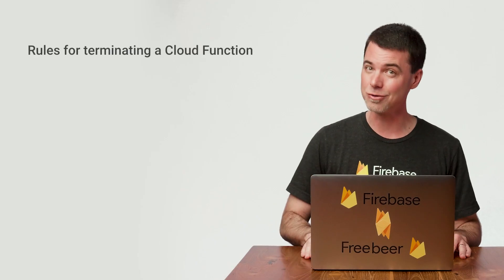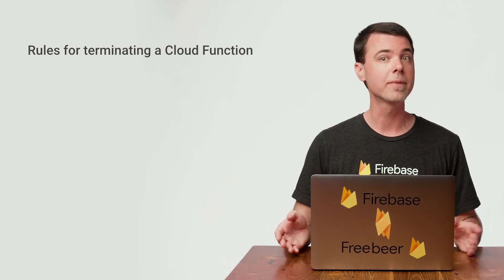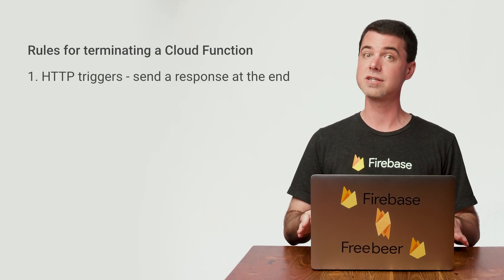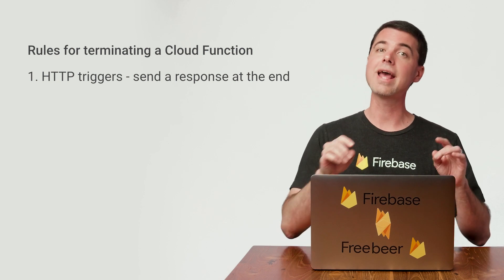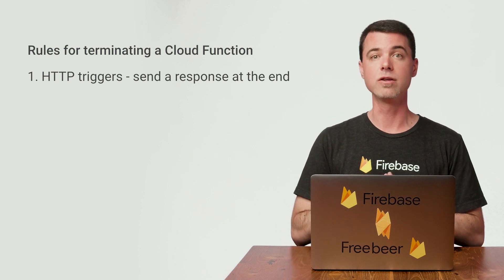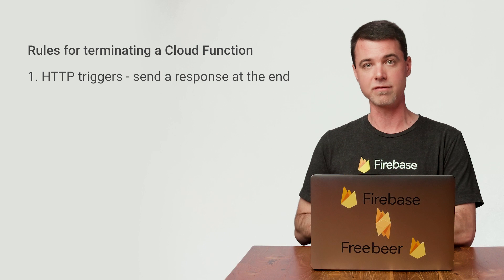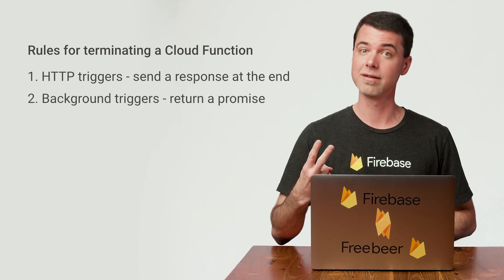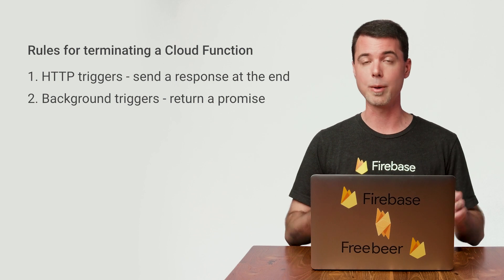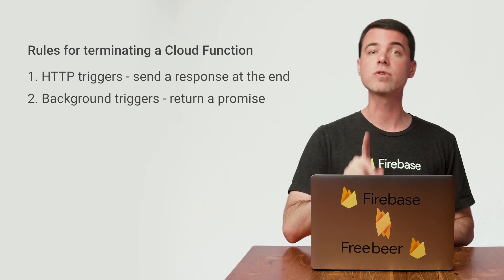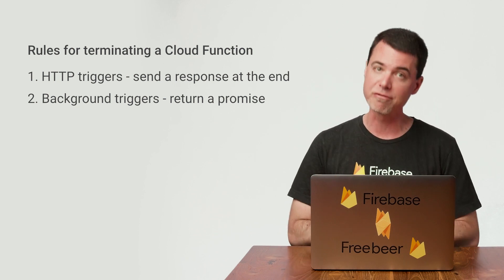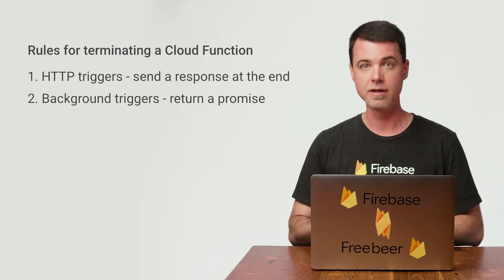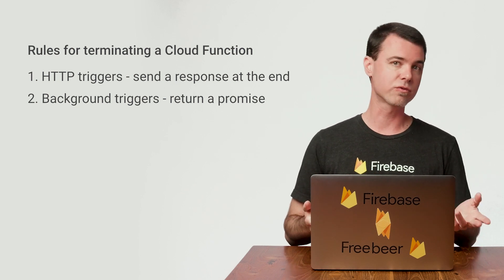Only when all the work is done is it safe to terminate your function, and it's crucial not to let your function terminate while work is still going on. So how exactly do you terminate a cloud function correctly? Well, there are two rules to know. First, for HTTP-type triggers, they're terminated after they send a response to the client using the response object that it received. If you followed my last video, you saw that with a hello world function. Second, for all other types of triggers, called background triggers, you need to return a promise that's fulfilled only after the work that was started in the function is fully complete. If there's no work to wait on, you can just return null.